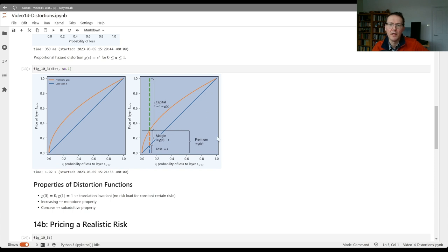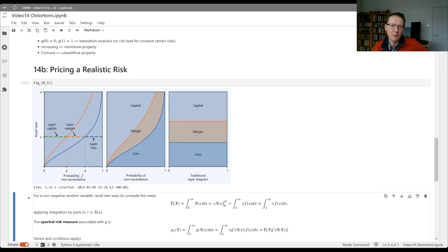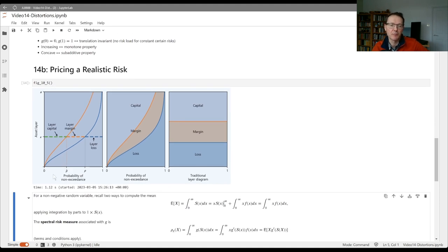This is for one binary risk, and now we're going to jump to a different looking picture for a realistic risk. The blue line is giving us the potential loss outcomes from this risk, ranked from the smallest loss outcome to the largest and indexed by their probability of non-exceedance. The median here would be at 0.5, the 90th percentile would be above 0.9, 10th percentile would be above 0.1.